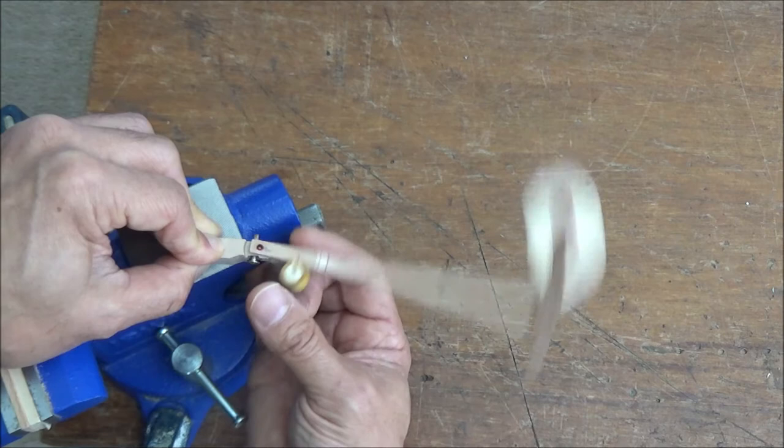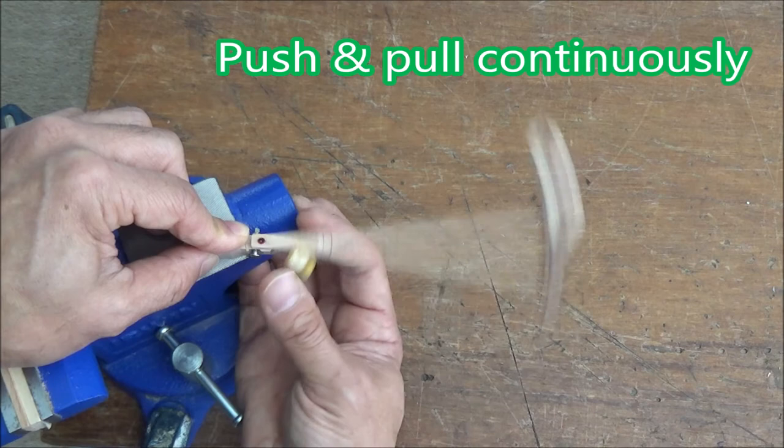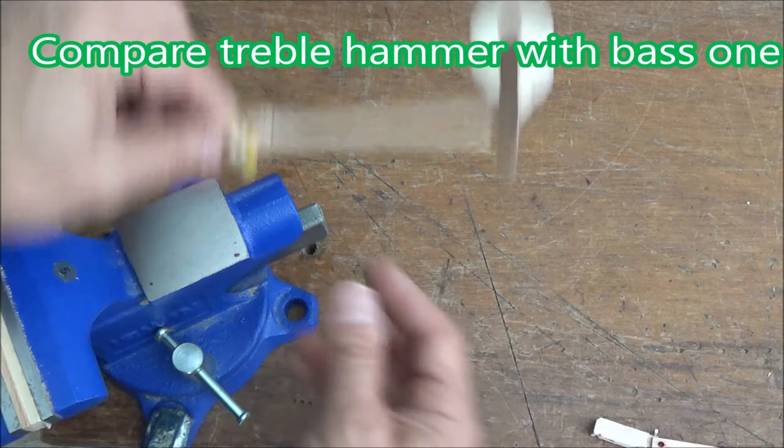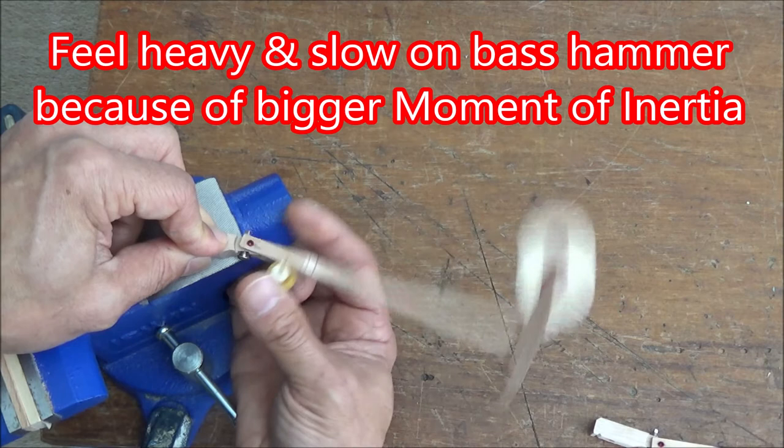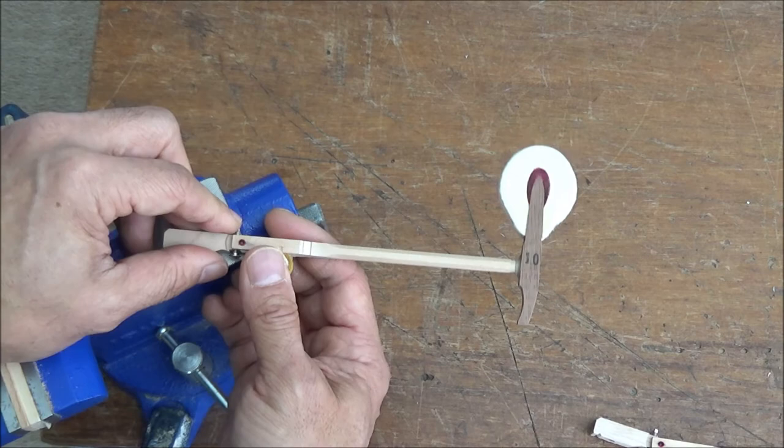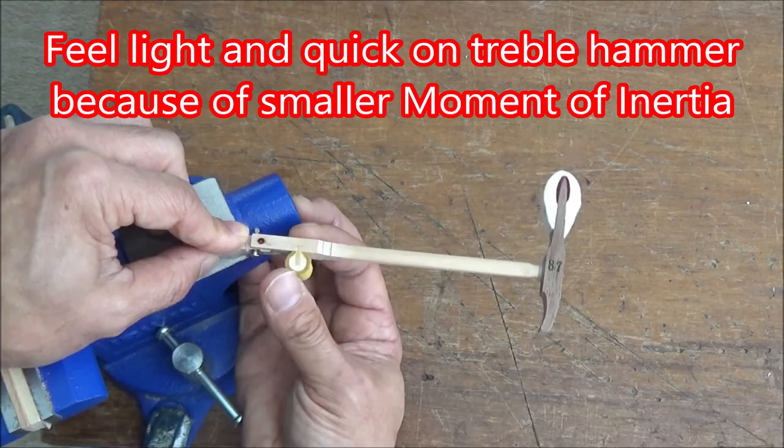Try a treble hammer next. Push and pull the roller and shank continuously. Compare treble and bass hammers the same way. You feel the difference between the two. You feel the bass hammer is very heavy and difficult to move continuously. On the other hand, the treble hammer can be moved very easily and quickly.